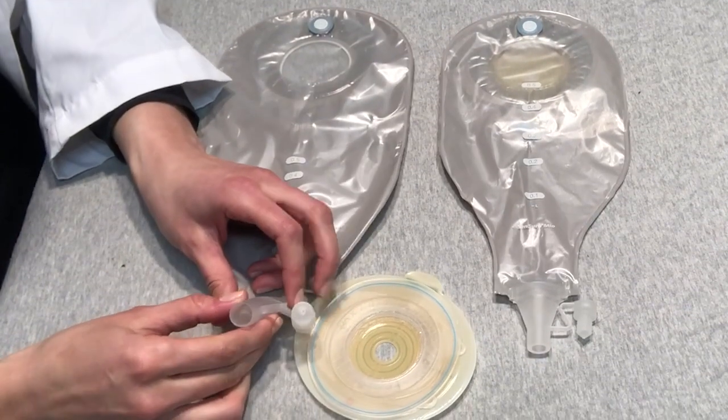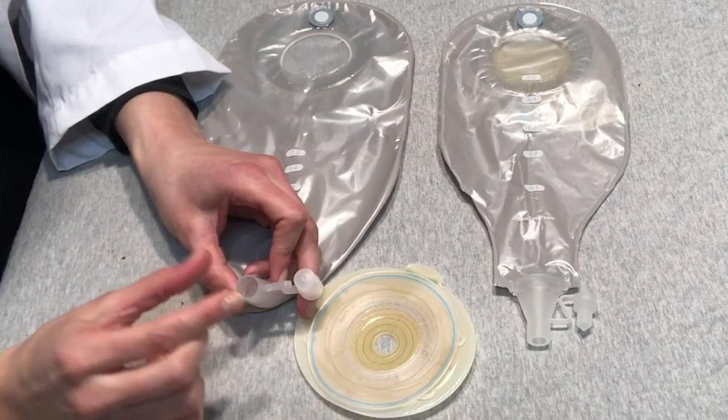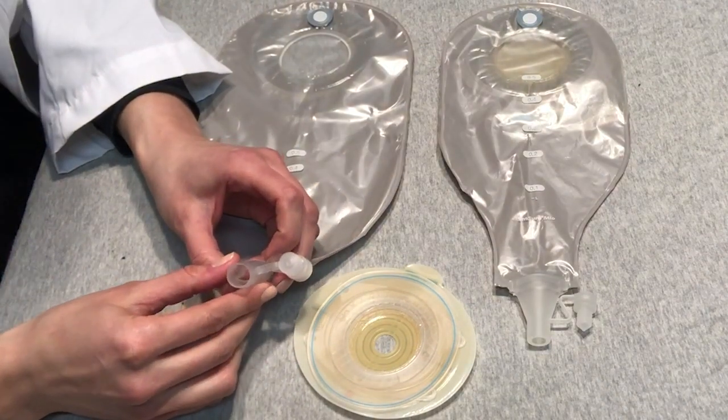This particular outlet is called a tap outlet. The tap outlet is a little bit wider. This helps with emptying thicker high output stool.